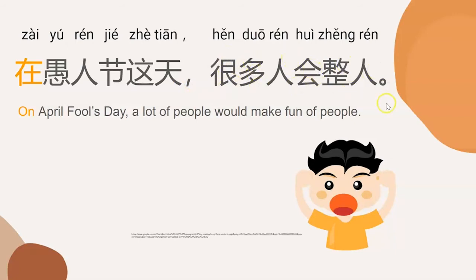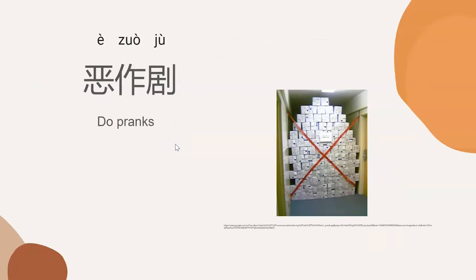很多人会整人 (hěn duō rén huì zhěng rén) — a lot of people would prank others. Then how do you say the full sentence? 在愚人节这天 (zài yú rén jié zhè tiān), 很多人会整人 (hěn duō rén huì zhěng rén). Please say this sentence: 在愚人节这天，很多人会整人.